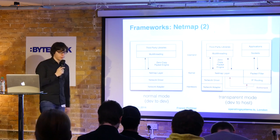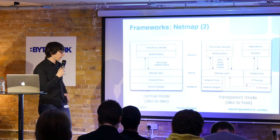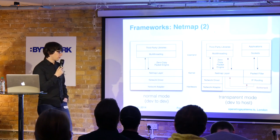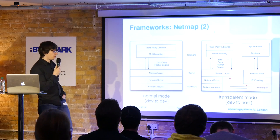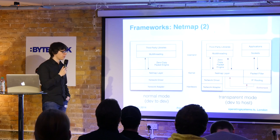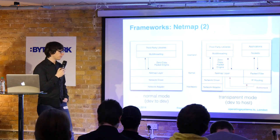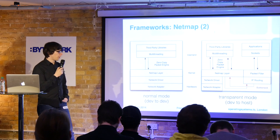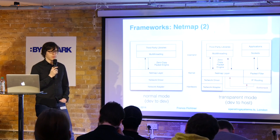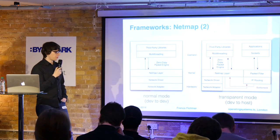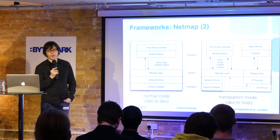There is one bottleneck in the transparent mode: leaving the netmap layer and going into kernel networking involves a memory copy from netmap slots to mbufs. There are plans to change this — if anyone is interested in helping to make netmap native throughout the network stack, get in touch.